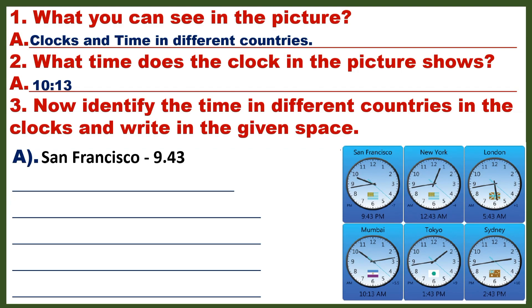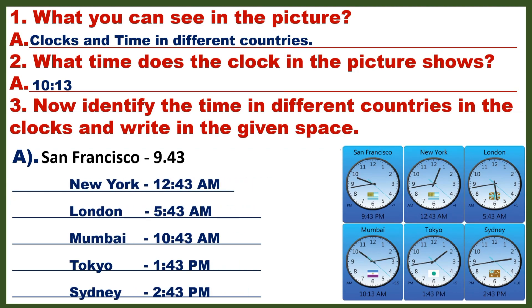Question 3: Now identify the time in different countries in the clocks and write in the given space. Answer: San Francisco 9:43 PM, New York 12:43 AM, London 5:43 AM, Mumbai 10:43 AM, Tokyo 1:43 PM, Sydney 2:43 PM.